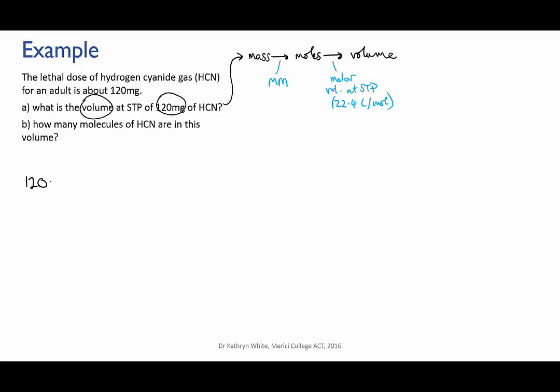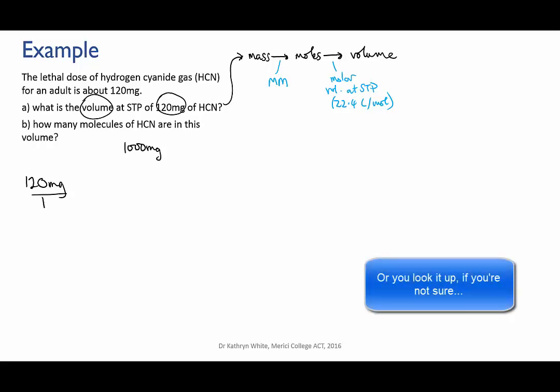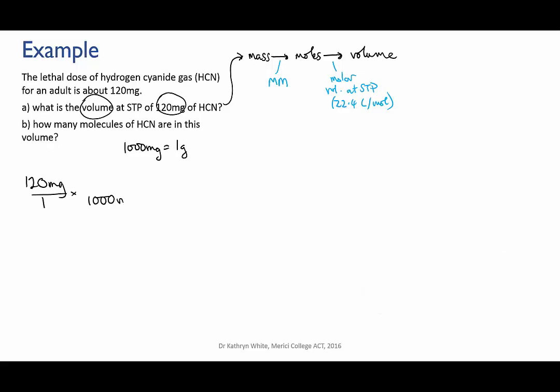First we write down what we know. 120 milligrams of HCN. And then we're going to convert this into grams. So we want the conversion factor for milligrams to grams. And we know that there are 1000 milligrams in one gram. So I'm going to put the milligrams on the bottom so that they cancel and the grams on the top. So if I were to calculate this out now, it would give me this mass in grams. But I'm going to keep going so that I can make it one single calculation at the end, which is slightly more efficient.